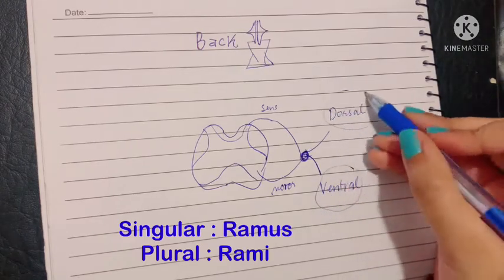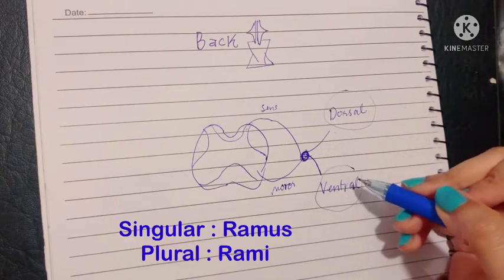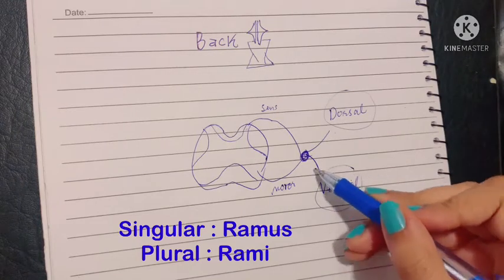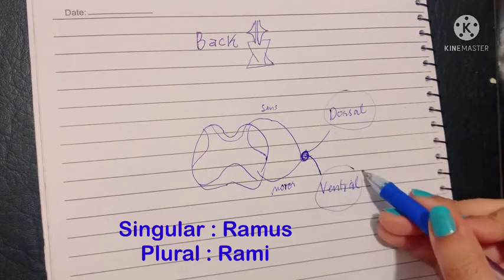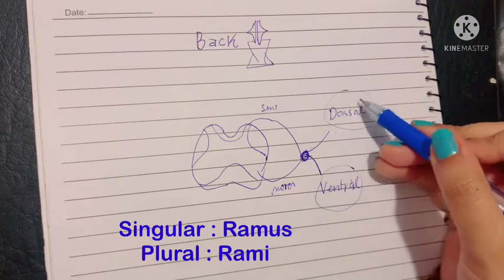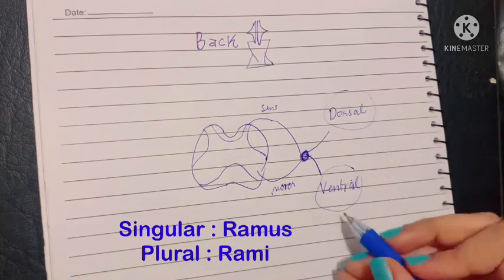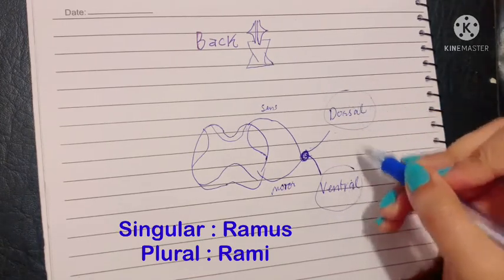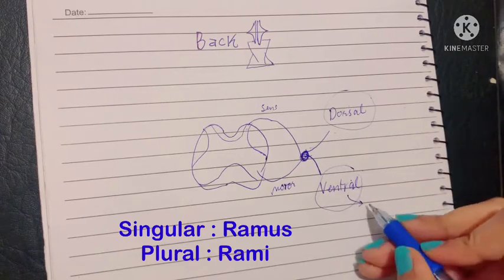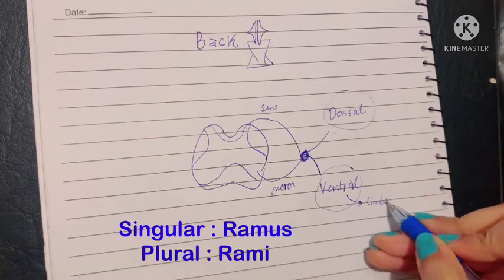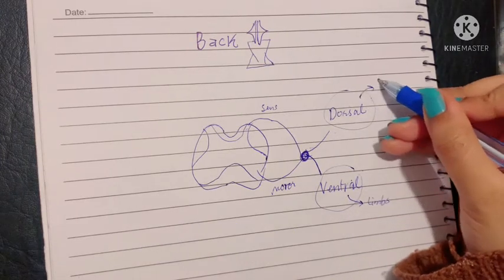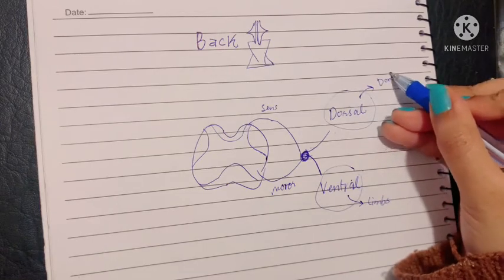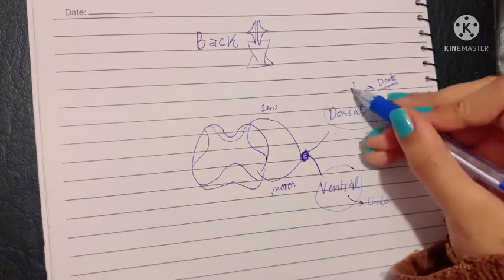The significance of this is that ventral rami supply the anterior part of the body while the dorsal rami supply the posterior part of the body. Keep in mind that the ventral rami is also responsible for supplying the limbs, as the posterior rami do not supply the limbs.